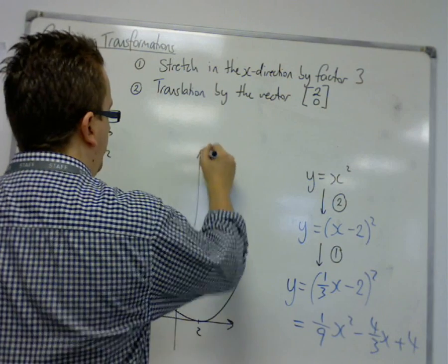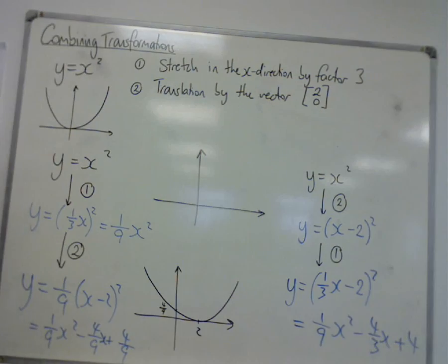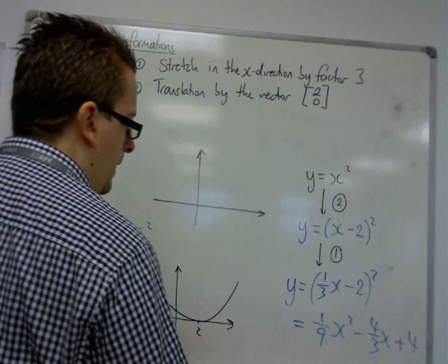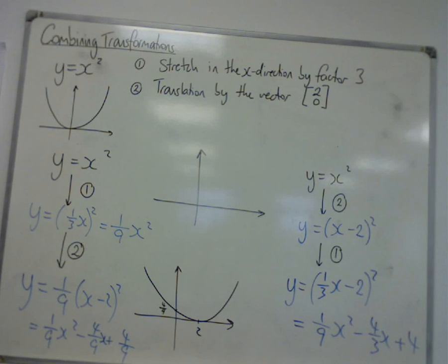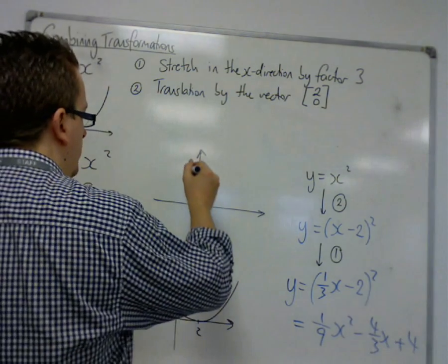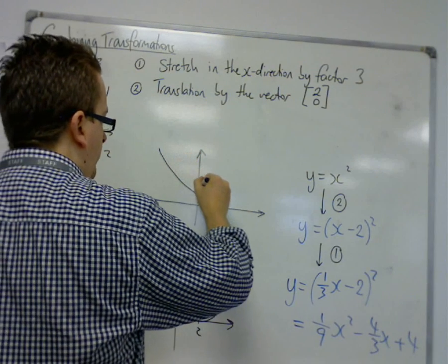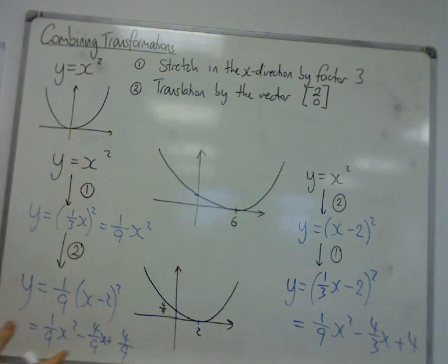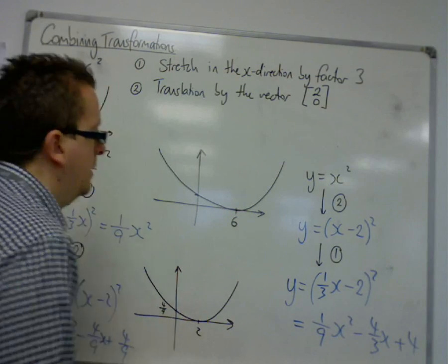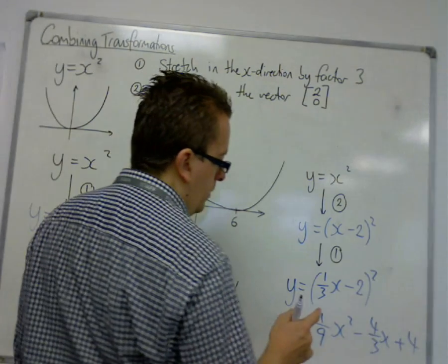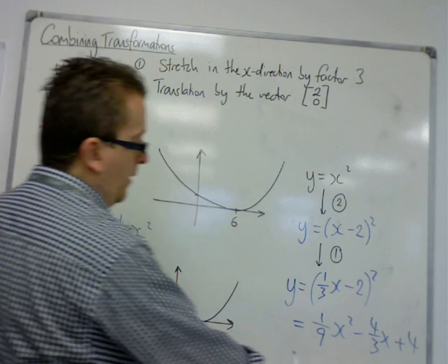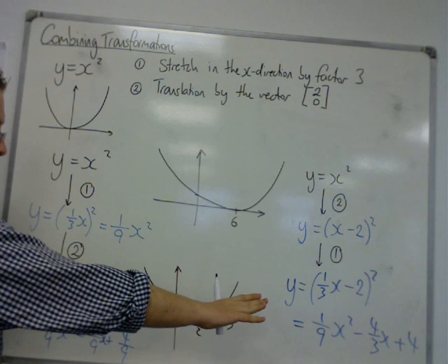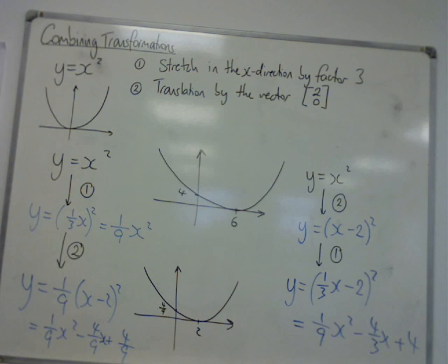And this graph will look like this one is going through 6 now. So it's still got that kind of shape. It's got the same shape as this one, but it's translated a lot. Well, it's almost got the same shape. And it's going through 4 on the y-axis.